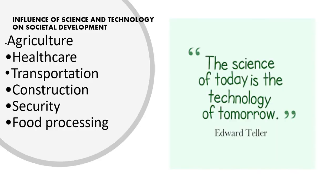Now I want to look at the influence of science and technology on societal development. In terms of agriculture, food, animals, and plants can be cultivated on a large scale with the help of fertilizers and tractors. The invention of science and technology has made agriculture very productive in the world today.